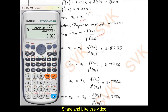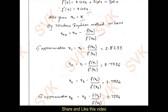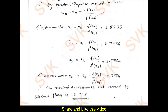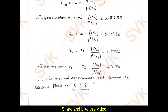Press plus equal to again — you got 2.799. For the third iteration, I got 2.798. For the fourth iteration, I got the same answer. For that reason, I will stop there. The answer is 2.798 as the required root.